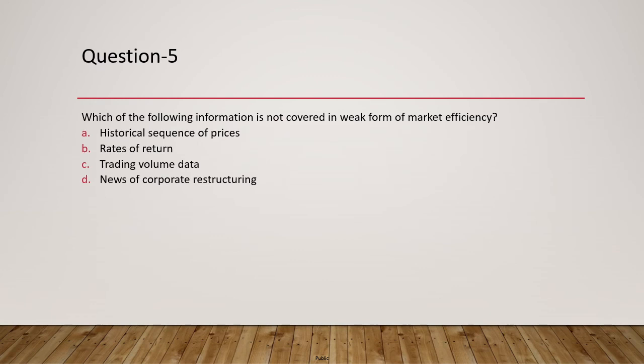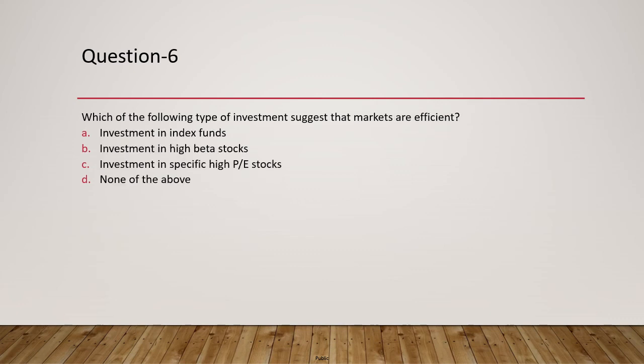Question 5: Which of the following information is NOT covered in the weak form of market efficiency? Historical prices, rates of return, and trading volume data are all included in the weak form. However, news of corporate restructuring — which is publicly available information — is not part of the weak form. The answer is D.